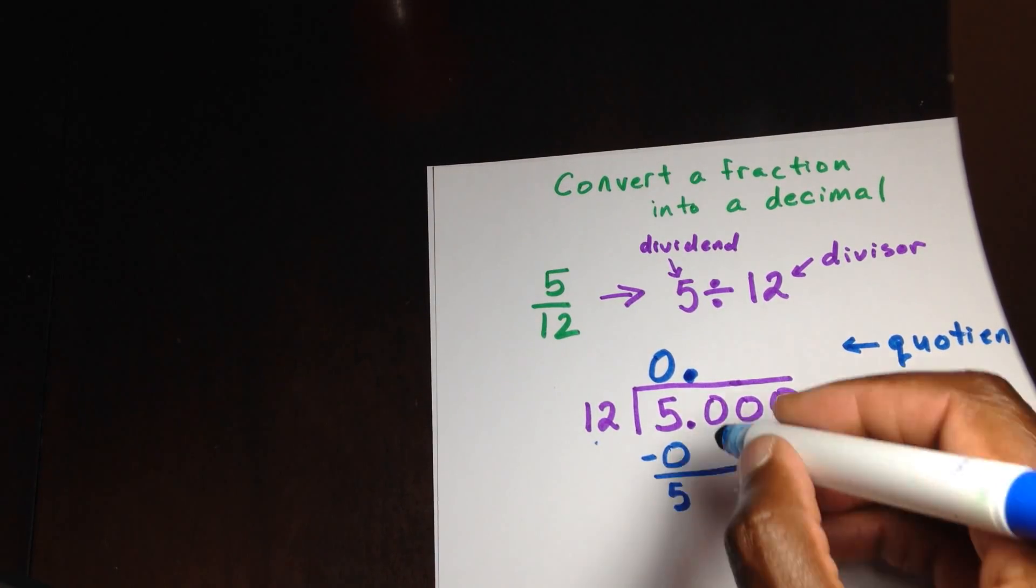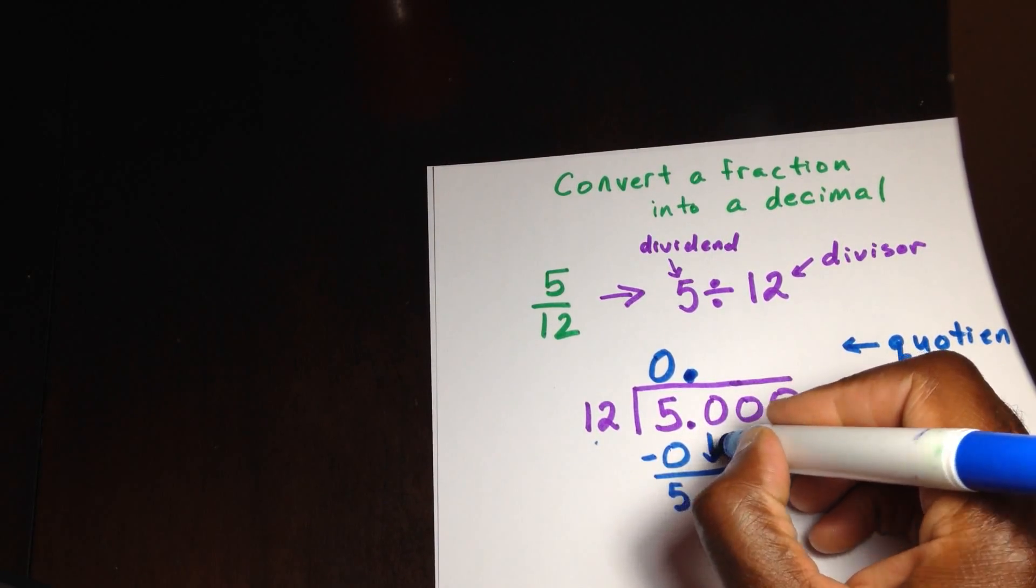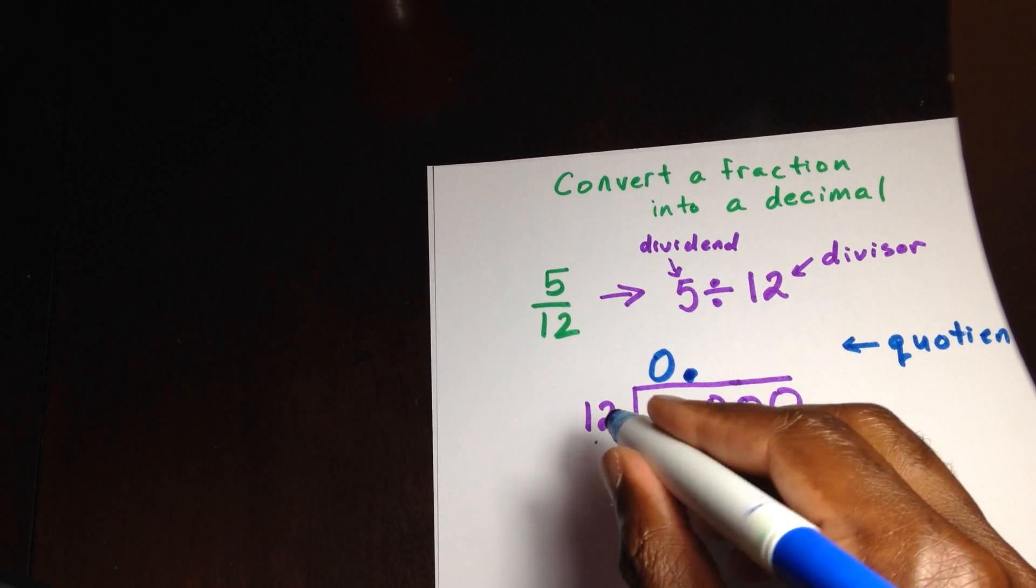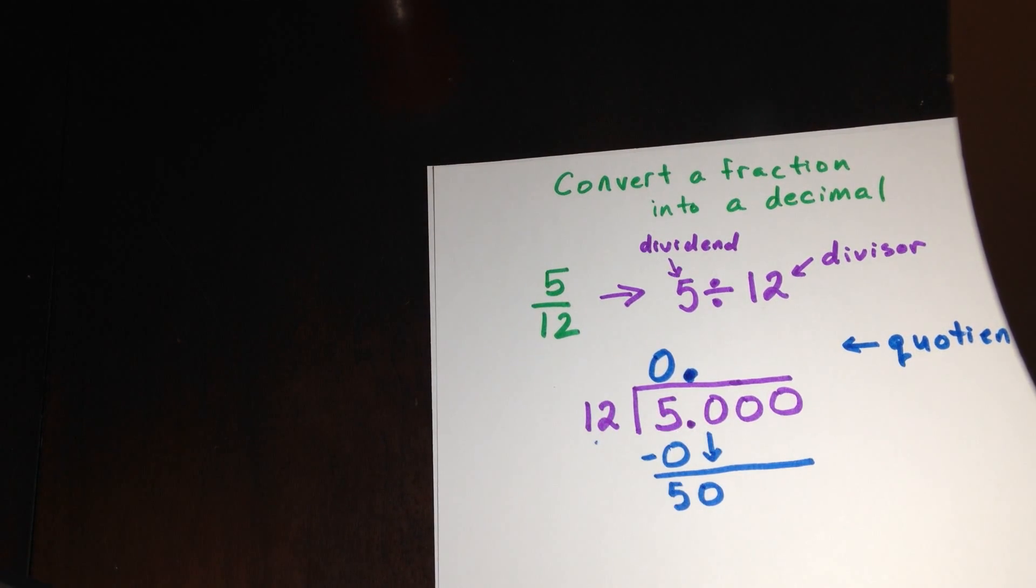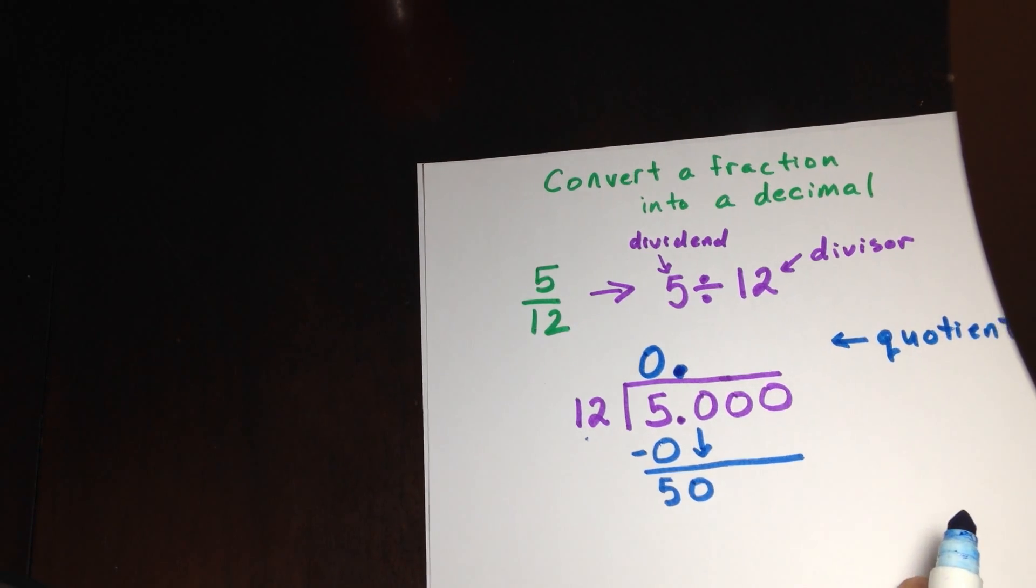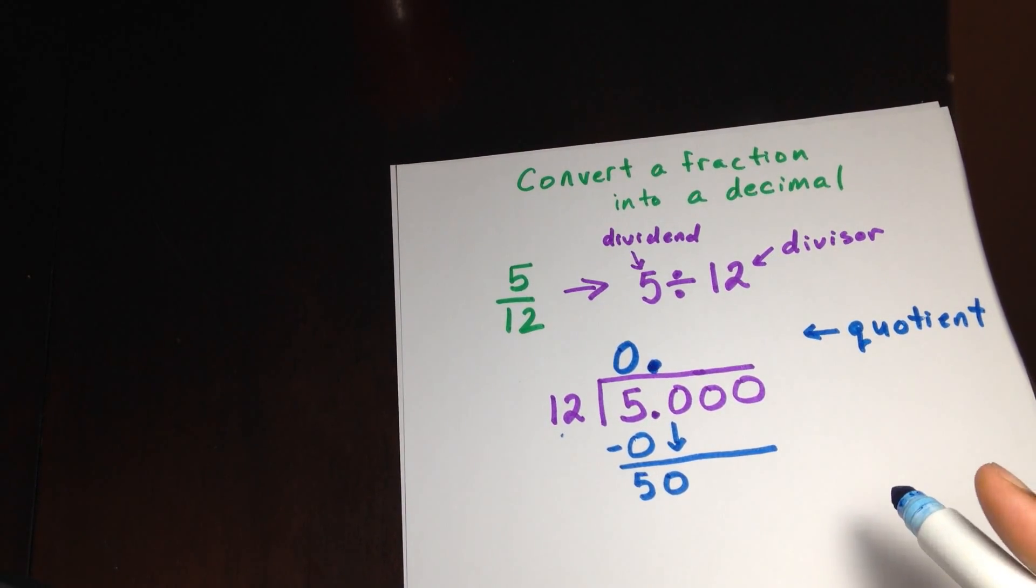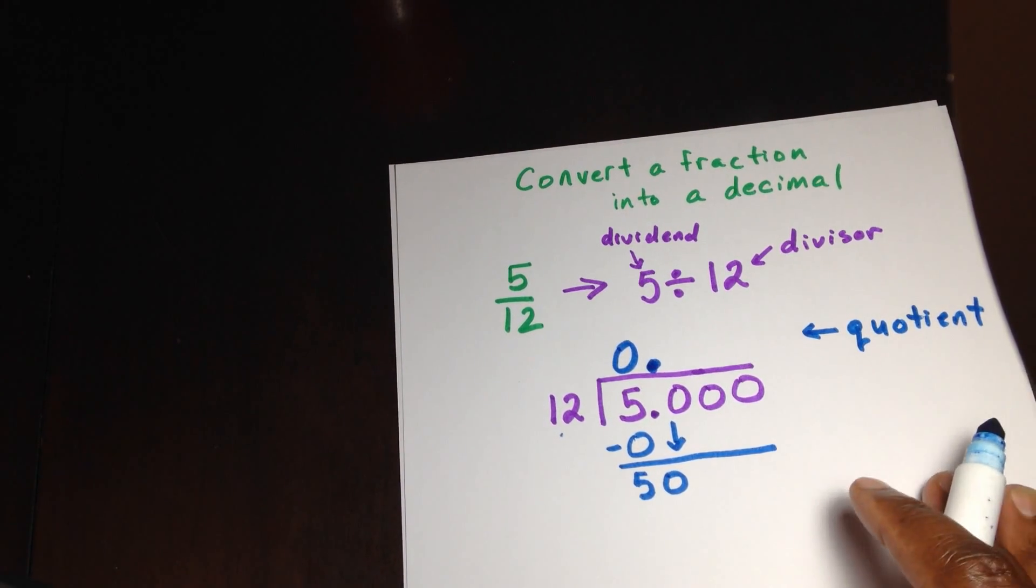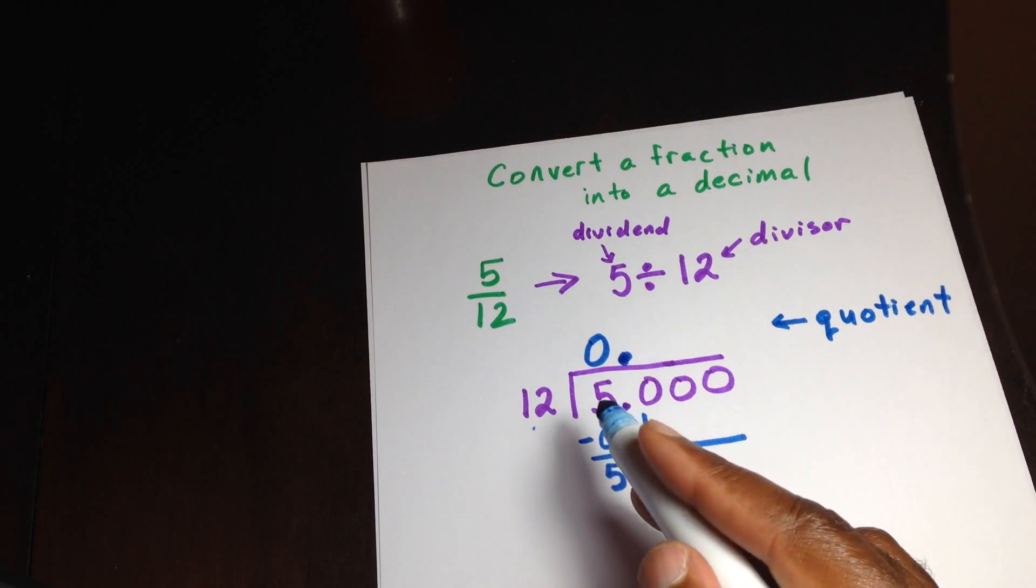And remember, every time we do division, we bring down the next number. So now you want to see how many times 12 can divide it into 50. Now, if you're not sure, because sometimes when we have numbers that are two digits, we think it's kind of hard, but it's easy. The only thing you want to do, if you have numbers that you're not sure of, you write down the multiples of that number.